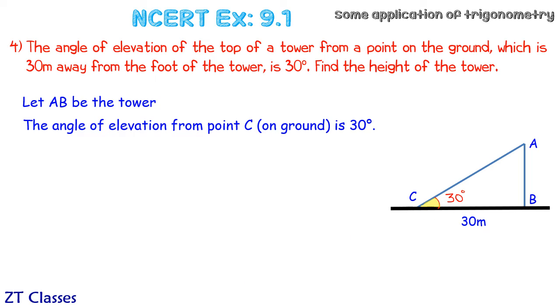So here tan 30 is AB upon BC, and tan 30, let's put the value of it as 1 by root 3, and BC is given as 30 meters. So we get AB upon 30 is 1 by root 3.